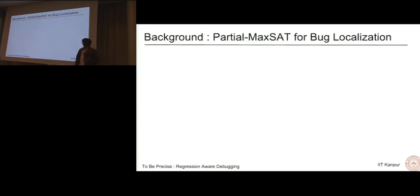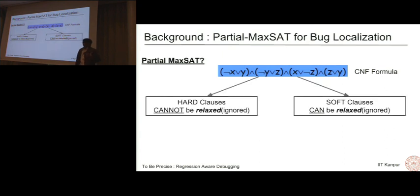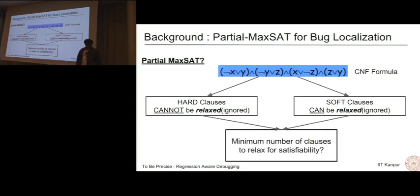Let's look at a technique using partial MaxSAT for bug localization. So what is partial MaxSAT? You are given a CNF formula, and you can partition the clauses into two classes: hard clauses and soft clauses. Hard clauses cannot be relaxed, meaning they cannot be removed from the entire formula. Soft clauses can be relaxed, and the query is what are the minimum number of clauses that need to be relaxed or removed so that we can get a satisfiable formula.